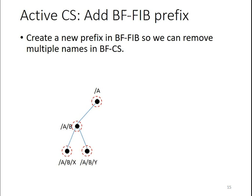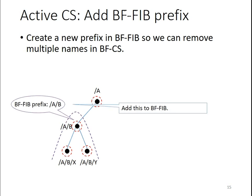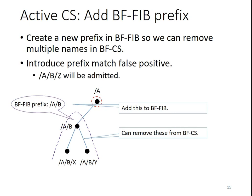Our second optimization is called active CS. When there is no FIB prefix at AB, we can still create a BFFIB prefix at AB to match every interest starting with AB, so we can remove some names from BFCS. However, this introduces a new kind of false positive called a prefix-matched false positive — for example, interest ABZ would match the BFFIB prefix and be admitted, but there is no actual FIB prefix at AB and no match in the CS. The goal of active CS is to minimize overall false positives using heuristics.